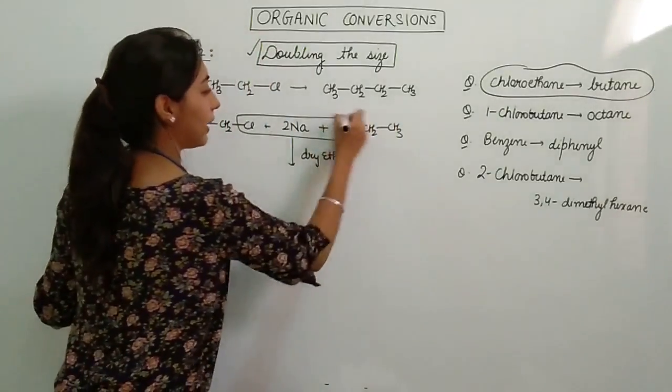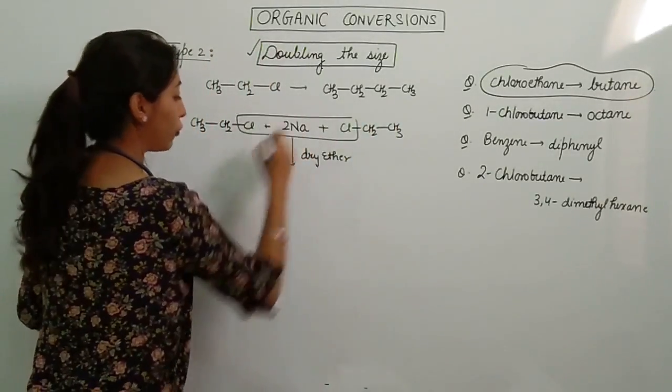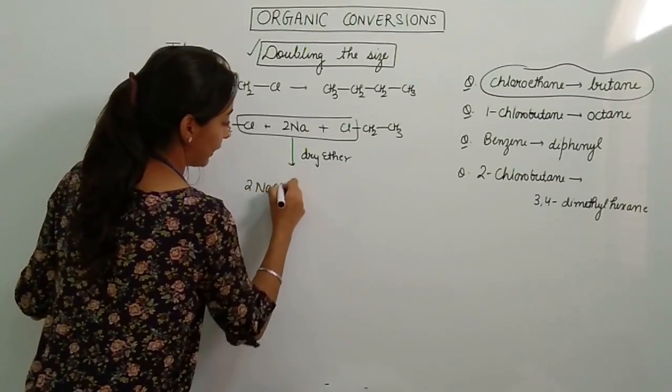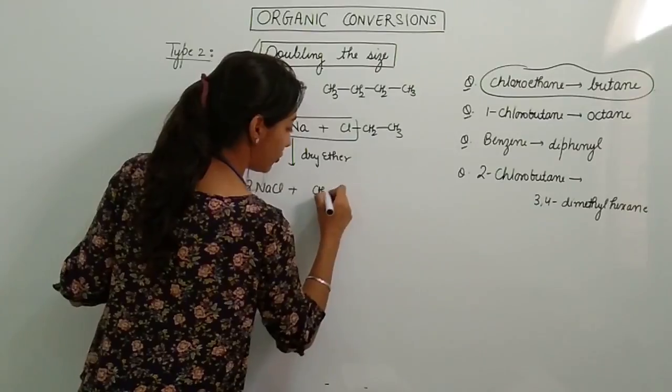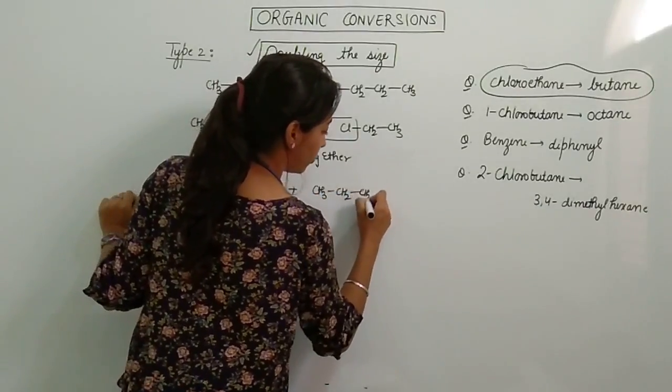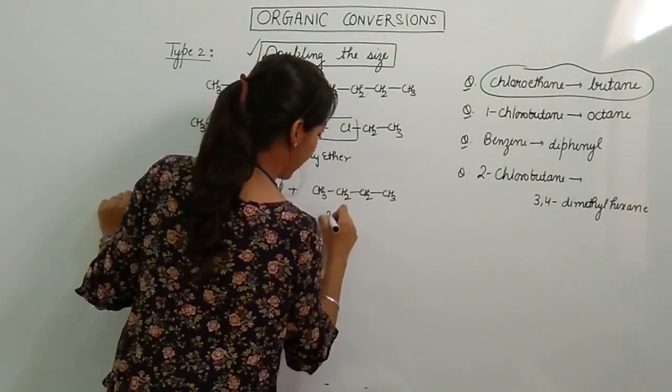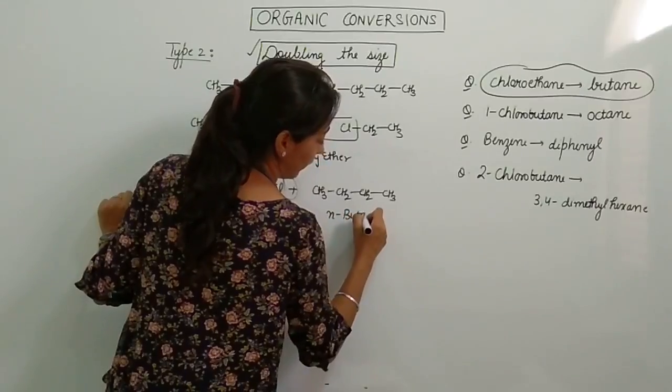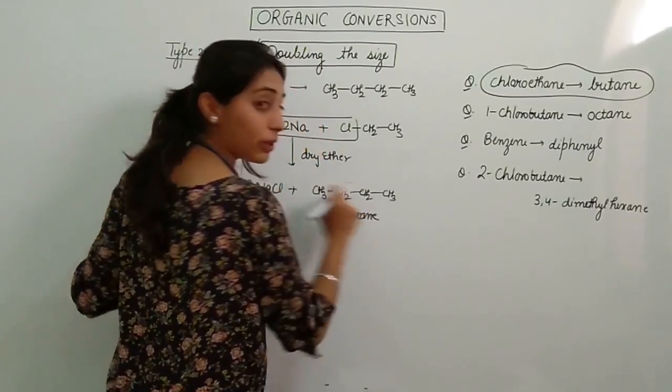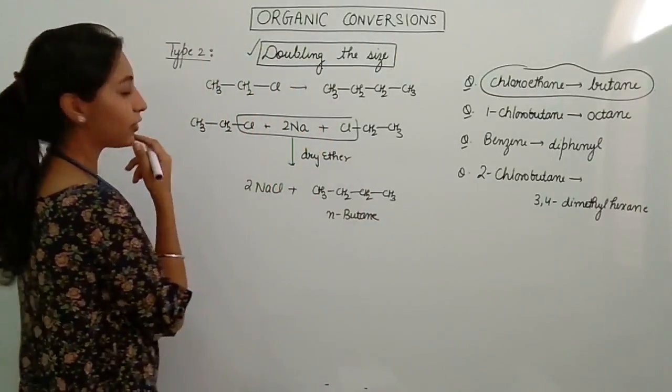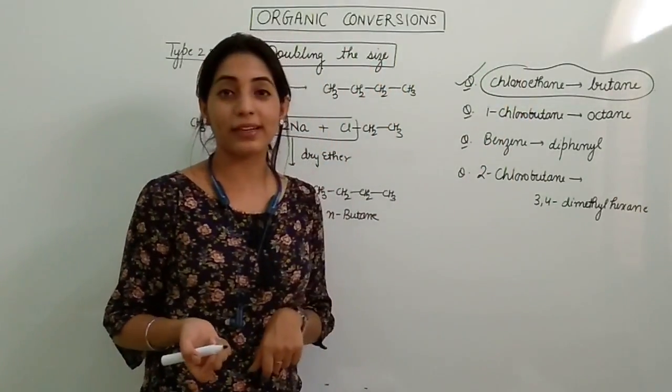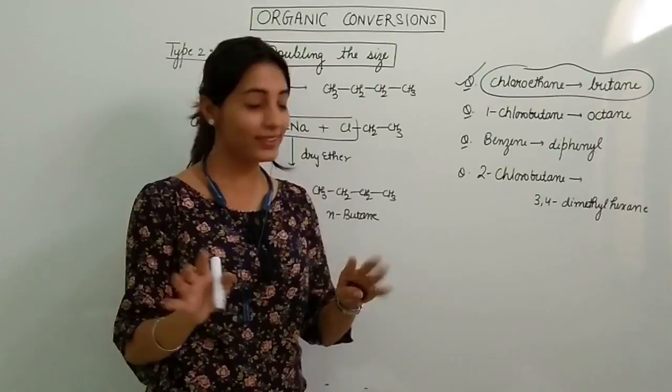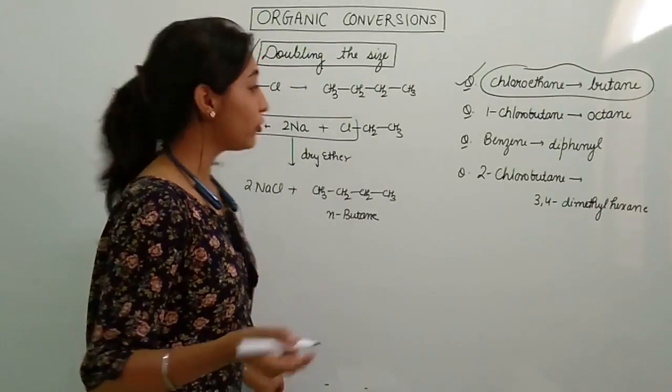Now these two Cl and Na will join together and they will go away to form two NaCl. Plus these two will join together to form CH3-CH2-CH2-CH3, which is n-butane. N stands for normal, a straight chain. Did you get the answer? Yes. So we can see chloroethane can be easily converted to butane. Done?